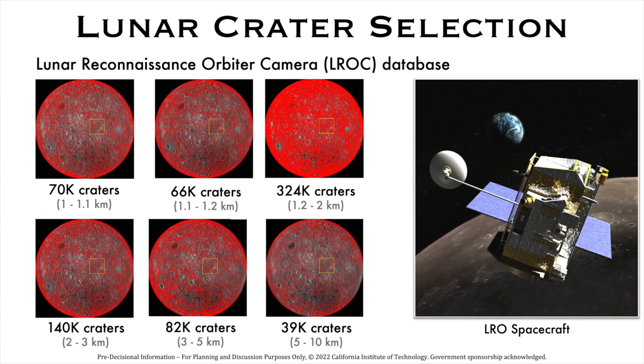Thanks to the Lunar Reconnaissance Orbiter mission, we now have high-resolution imagery of the moon. In the LROC database, there are over 450,000 craters in the 1 to 2 km diameter range that are excellent candidate craters for LCRT.